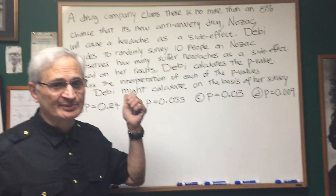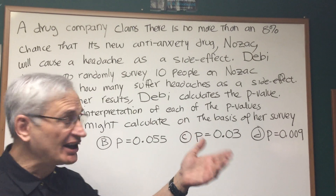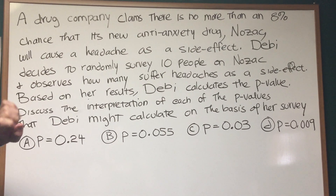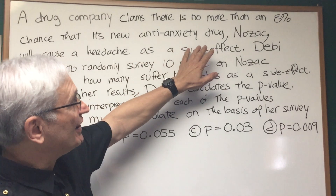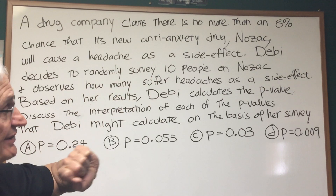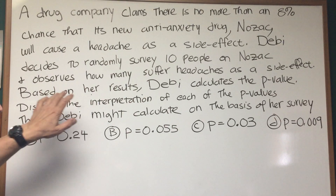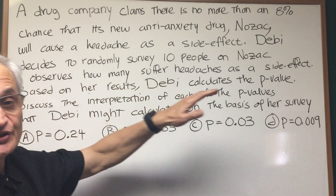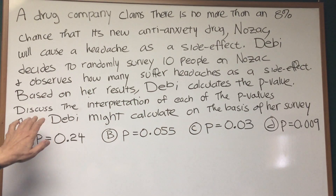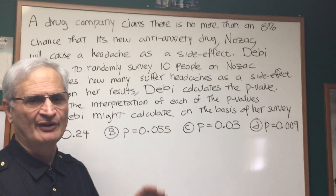Professor Blois here. The p-value has been coming up on recent issues of the DAT. Let's read this problem together. A drug company claims there is no more than an 8% chance that its new anti-anxiety drug, Nozac, will cause a headache as a side effect. Debbie decides to randomly survey 10 people on Nozac and observes how many suffer headache as a side effect. Based on her results, Debbie calculates the p-value. Discuss the interpretation of each of the p-values that Debbie might calculate on the basis of her survey.